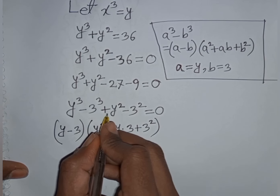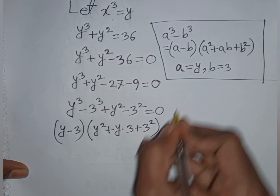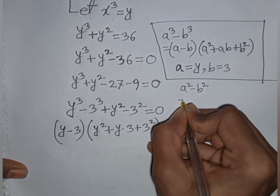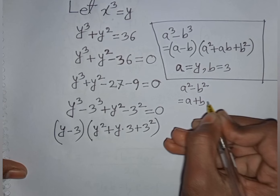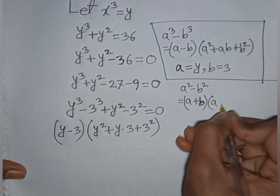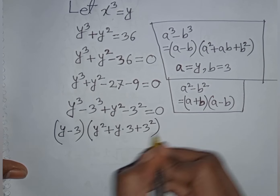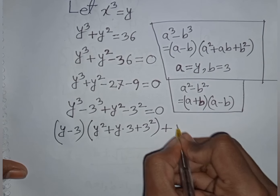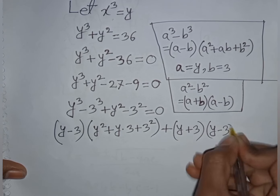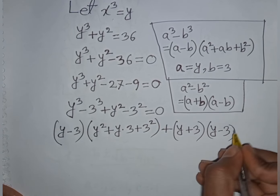For the remaining terms, applying a^2 − b^2 = (a + b)(a − b) with a = y and b = 3: y^2 − 9 = (y + 3)(y − 3). So the full expression is (y − 3)(y^2 + 3y + 9) + (y + 3)(y − 3) = 0.